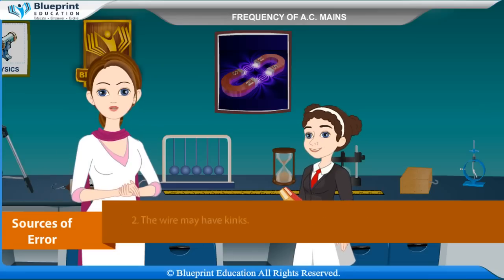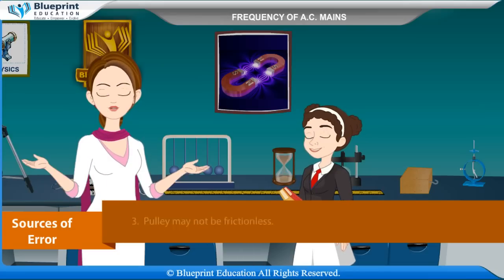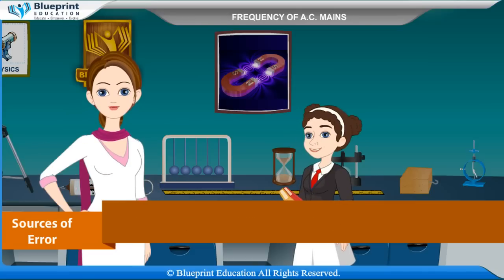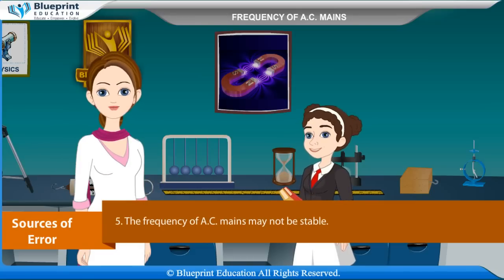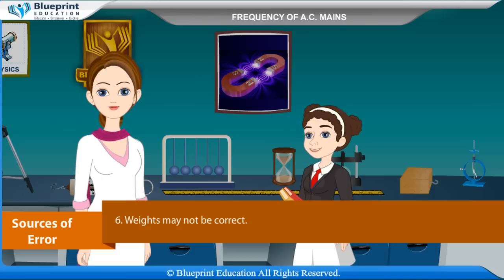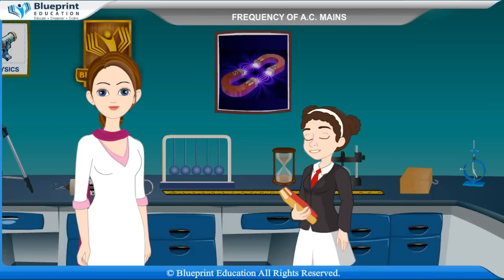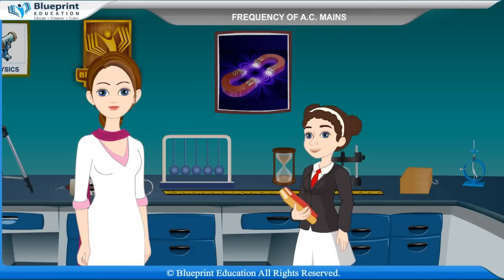Remove the weight from the hanger after completion of the experiment. Sources of error: the wire may not have uniform area of cross-section; the wire may have kinks; the pulley may not be frictionless; the knife edges of the bridges may not be sharp; the frequency of AC mains may not be stable; weights may not be correct. Thank you, ma'am — this experiment has made the concept very easy to understand.